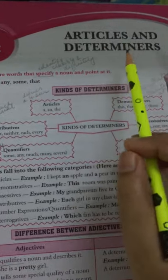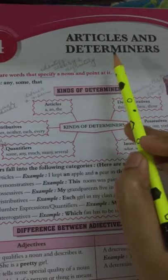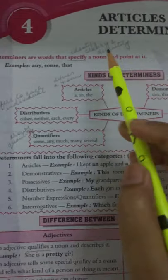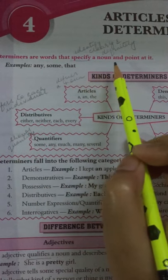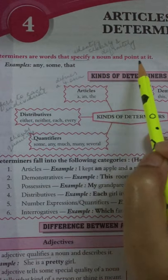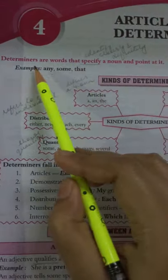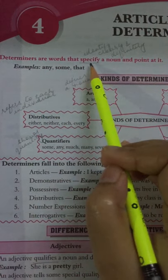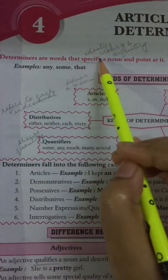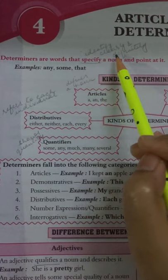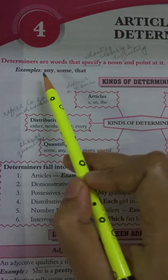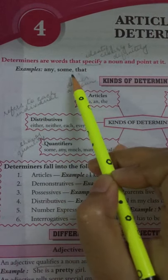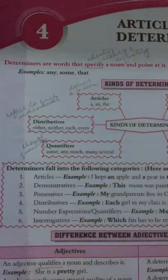Now let us quickly start the new chapter — Articles and Determiners. Determiners are words that specify a noun and point at it. Specify means to identify clearly and definitely. Examples include: any, some, that.